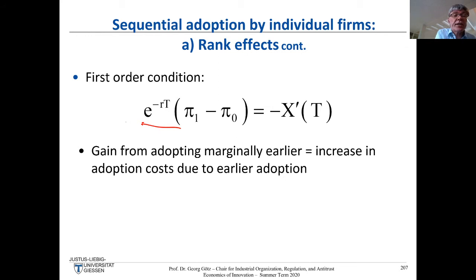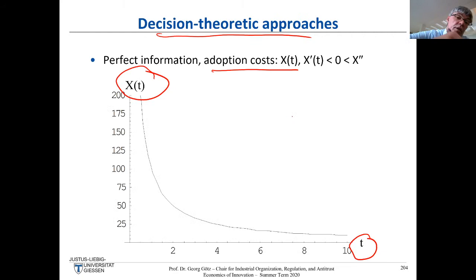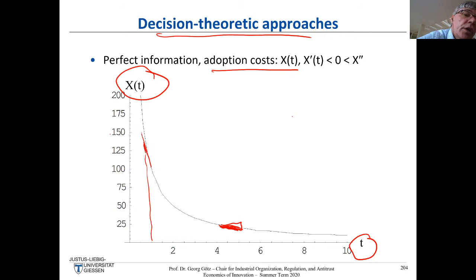Adopting earlier — the gain is just your profit increase. The cost is that adoption costs are higher (the derivative x'(T) is positive, meaning delaying reduces costs). Looking back at the adoption-cost curve: if you adopt very late, you don't gain much by waiting further because costs are falling slowly. But if you're planning to adopt soon, the derivative is much steeper and you'd gain a lot by waiting a bit longer.